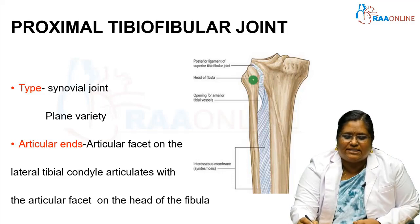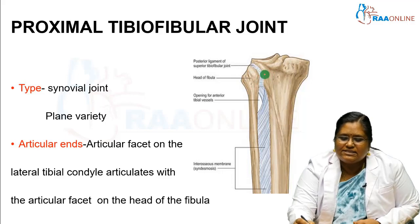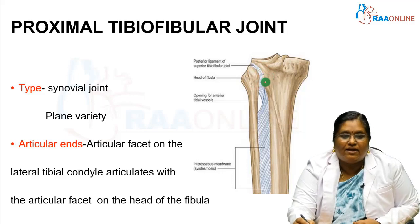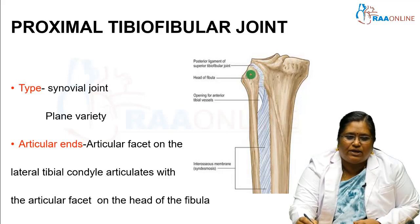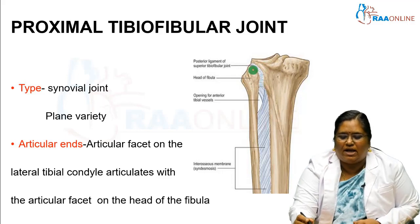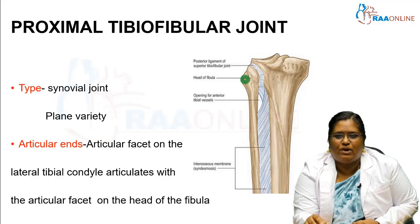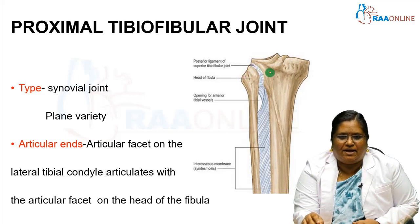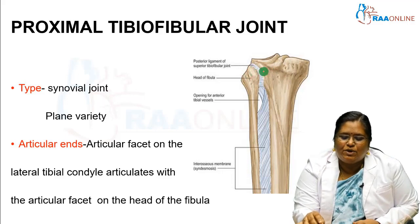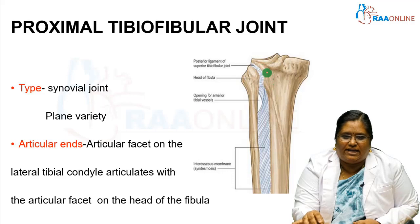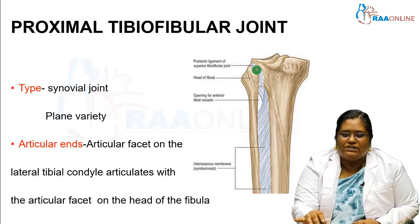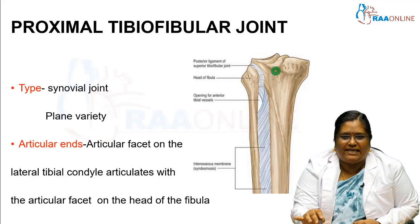What are the articular ends? There are two articular ends. The articular facet on the lateral tibial condyle articulates with the articular facet on the head of the fibula. So the proximal tibiofibular joint is formed between the articular facet on the lateral tibial condyle and the articular facet on the head of the fibula.